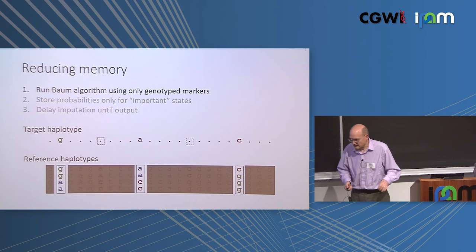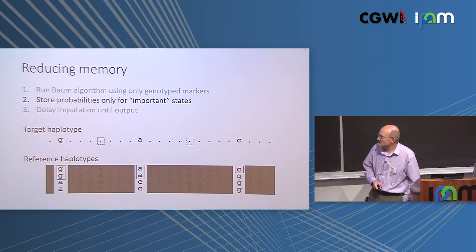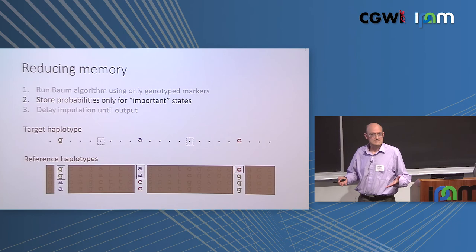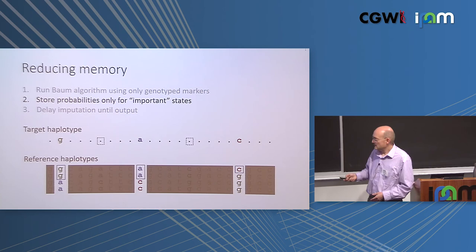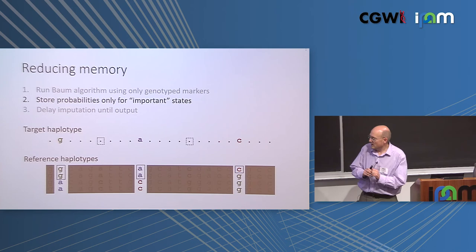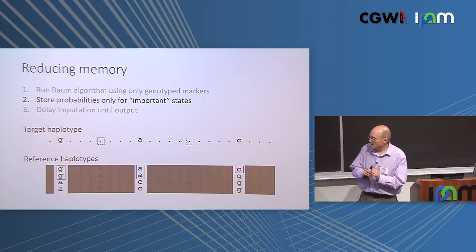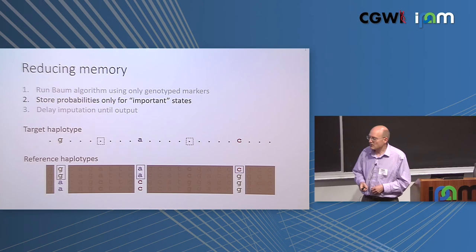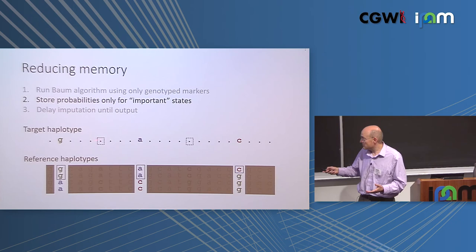Second, instead of storing all state probabilities, store only the important ones. The measure of importance is the state probability itself — high probability means important, low means not. This approximates unimportant states as zero and ignores them, reducing memory and also benefiting computation because when imputing those markers you have fewer states to consider.